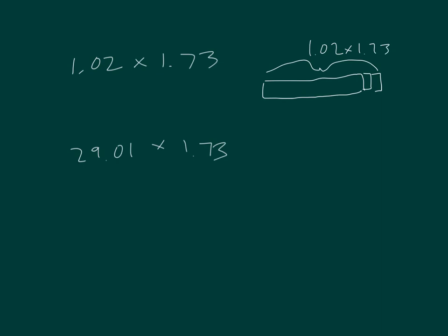And then for the other one, you'd have 29 and 1 hundredths times 1.73. If I was to figure this out, I would get 1.7646 for this expression. And this would be way more than 1.73. It would be about 30 times as much.